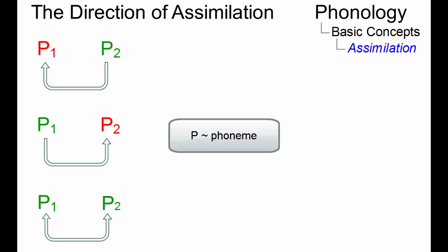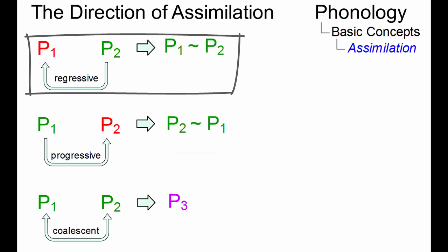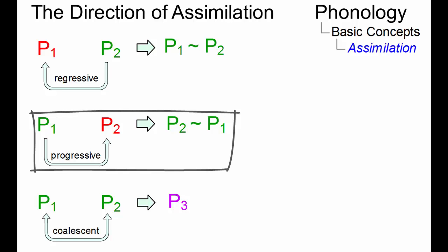Taking the direction of the phonemic influence, we can define assimilation as regressive, backward directed, progressive or forward directed, or as coalescent.